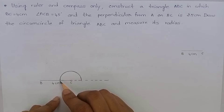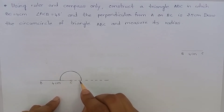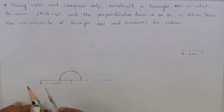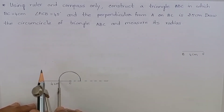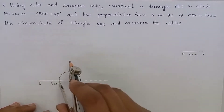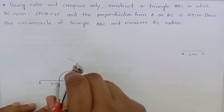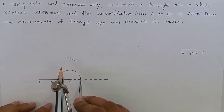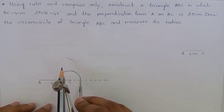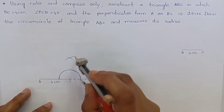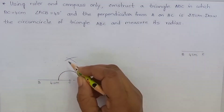So let us take the angle bisector of this angle. To do this, keep the compass at this point and cut an arc. Keep the compass at this point and cut an arc. Now join this.